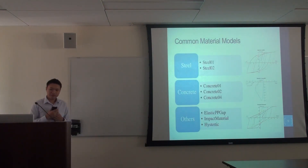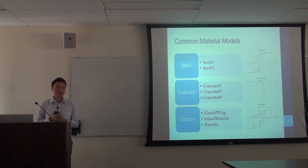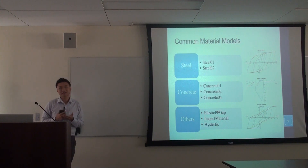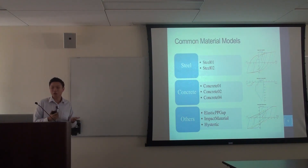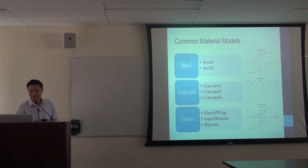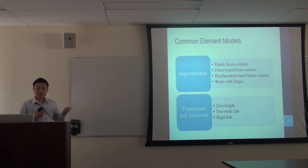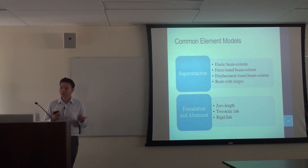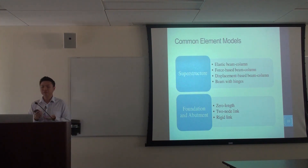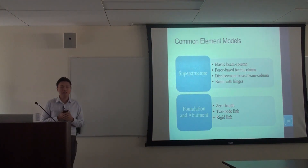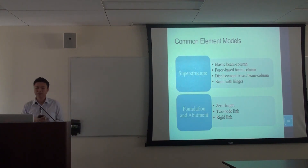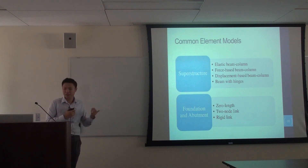We investigated and reviewed the common material and element models typically used in reinforced concrete bridge simulation, and we developed some standard scripts for testing material and element models under different load histories. Common material models include those for steel, concrete, and gap and impact material models. Common element models include elastic beam columns and nonlinear beam column elements for the superstructure — including force-based beam column, displacement-based beam column, and beam with hinges — and zero-length, two-node-link, and rigid-link elements for foundation and abutment modeling.